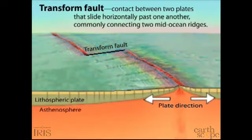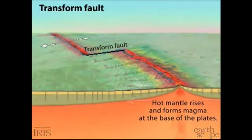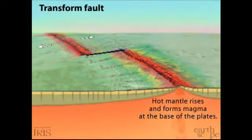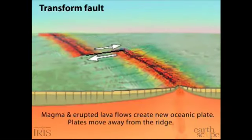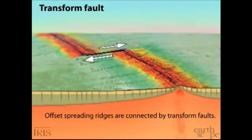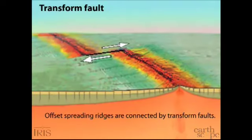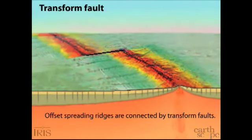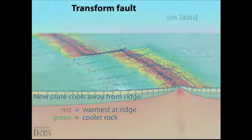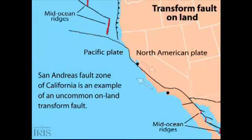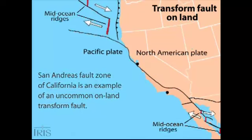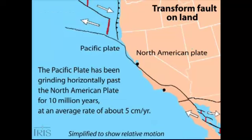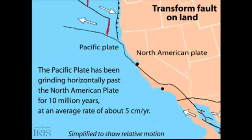In this example, you see a mid-ocean ridge — which is a divergent boundary — offset by a transform fault in the middle, where the white arrow shows it moving to the side and separating the mid-ocean ridge. You can also see a transform boundary showing how the San Andreas Fault has part of California moving to the north.